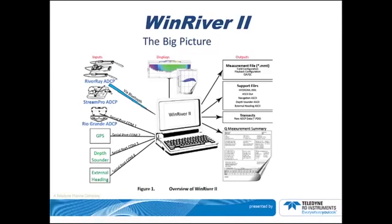Next, we have the supported files, which include an XML-style output, an easily customizable ASCII output, GPS data, and others. Last of all, there are the four or more data files containing the actual transects. The physical measurement consists of four actual transects across the river. The reason for the transects is the Q measurement summary report, which we will see in more detail on the next slide.